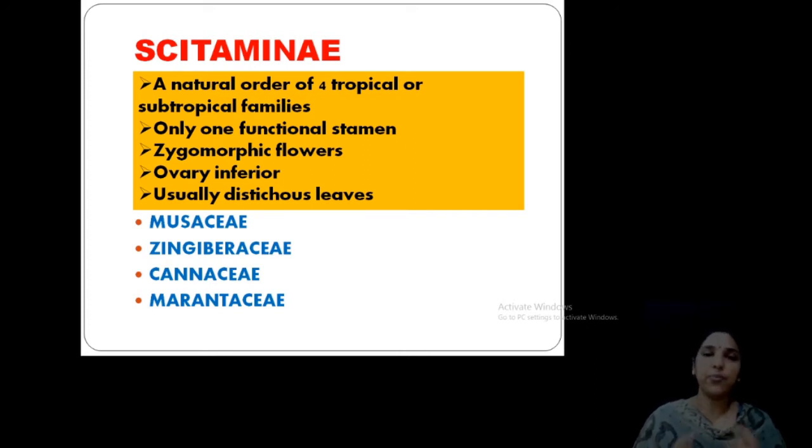What are they? Musaceae, Zingiberaceae, Cannaceae, and Marantaceae. From this, the Zingiberaceae you have already studied in your UG classes. Let us discuss one by one the families of Scitamineae.